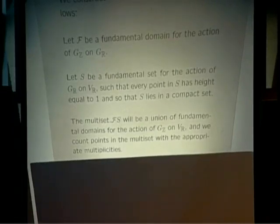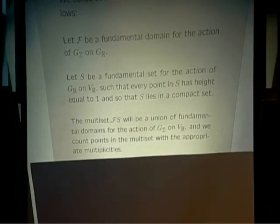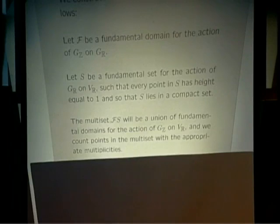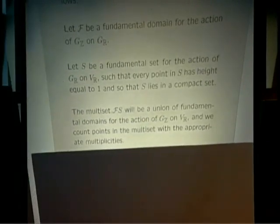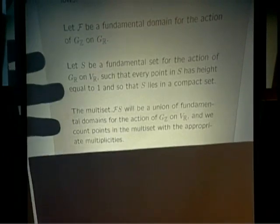The main observation is that not only is F×S a fundamental domain for G(Z) acting on V(R), but F×g×S for any element g of the real group will also be a fundamental domain. So if N(V;X) denotes the number of non-degenerate orbits on V(Z) having height less than X, you can think of N(V;X) as the number of points in a fundamental region F×g×S that have height less than X. Since every fundamental domain has the same number of points, we can average over a bounded open set G_0 inside the real group G.